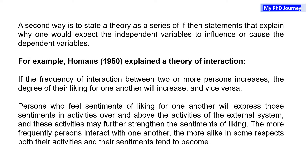A second way is to state a theory as a series of if-then statements that explain why one would expect the independent variables to influence or cause the dependent variables. For example, Homans (1950) explained a theory of interaction: if the frequency of interaction between two or more persons increases, the degree of their liking for one another will increase, and vice versa.